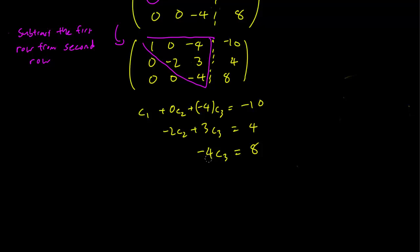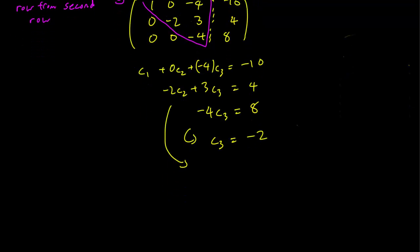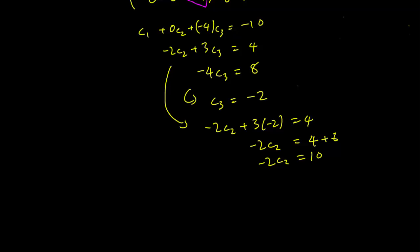So minus 4c3 equals 8 implies that c3 is equal to minus 2. But plugging that into the second equation, we get that minus 2c2 plus 3 times minus 2 equals 4. Or minus 2c2 equals 4 plus 6. Minus 2c2 equals 10. And c2 equals minus 5.